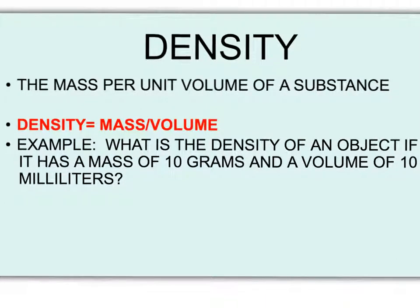Now staying with the metric system, we have density. Density is the mass per unit volume of a substance. The chemical formula for density is mass divided by volume.